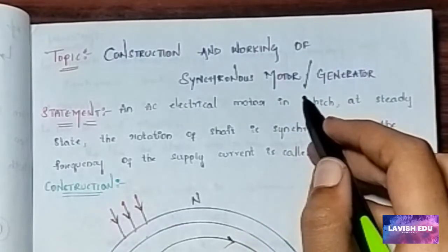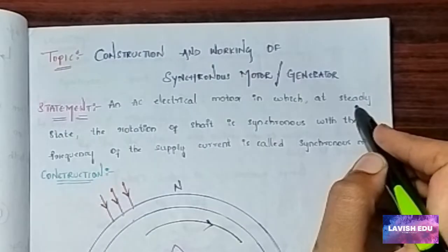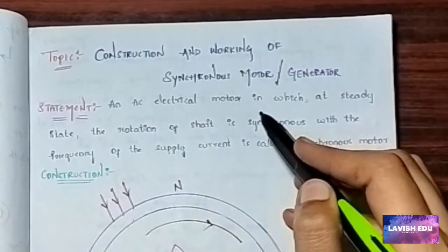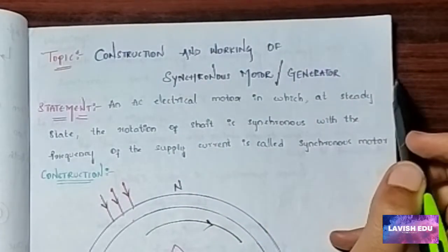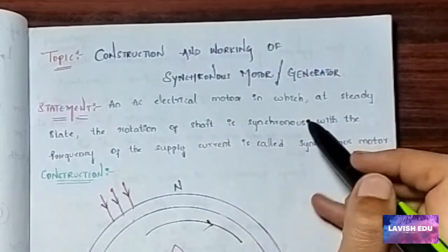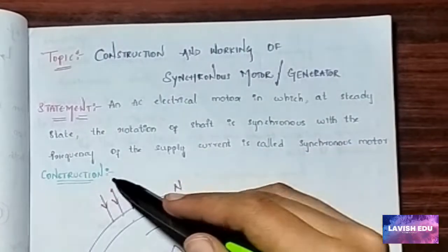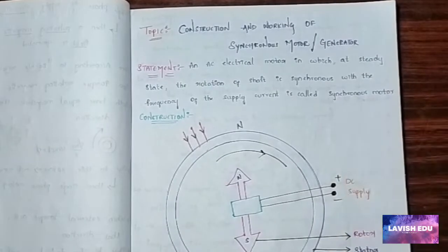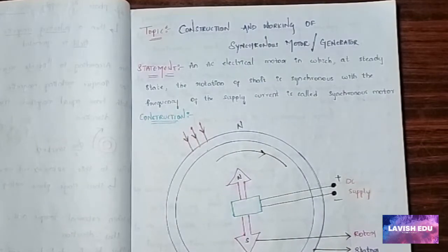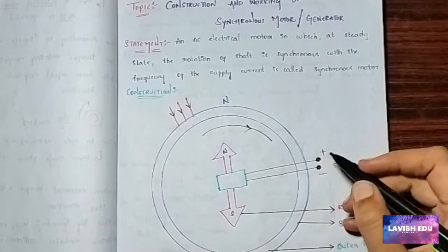Let's start with the statement. What is the statement? An AC electrical motor in which, at static state, the rotation of the shaft is synchronous with the frequency of the supply current is called a synchronous motor. We will see the working and you will understand the statement also.